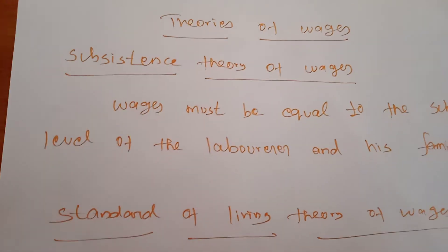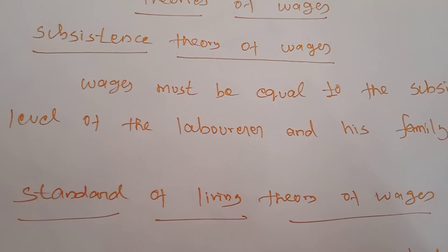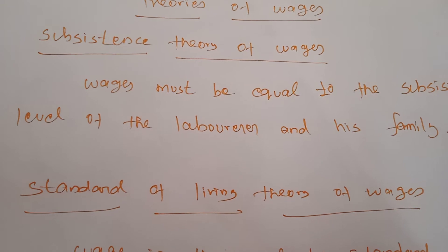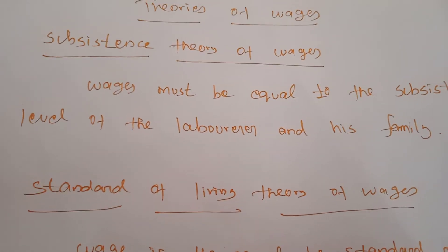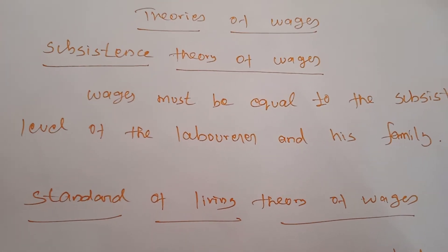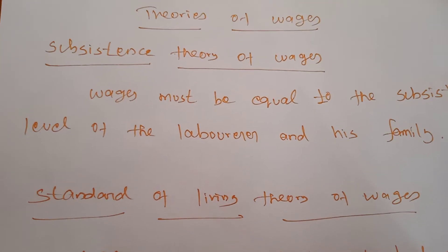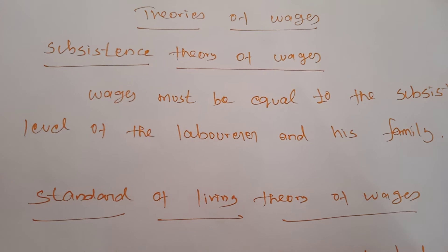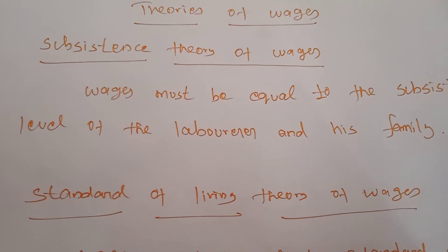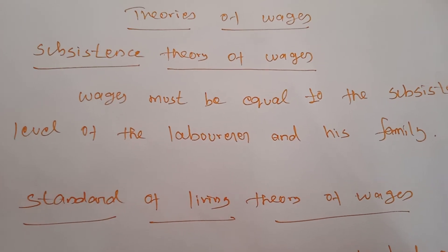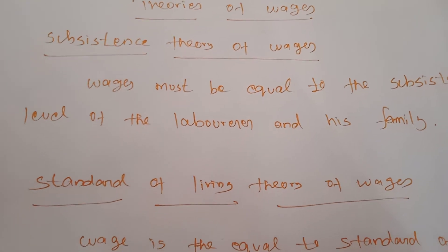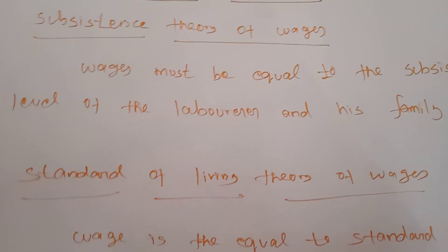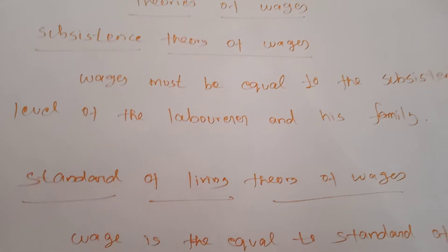The subsistence theory of wages is one of the oldest theories of wages. It was first explained by the Physiocrats, a group of French economists, and was restated by David Ricardo, after which the theory got its full form. According to this theory, wages must be equal to the subsistence level of the labourer and his family. Subsistence means the minimum amount of food, clothing, and shelter which workers and their families require for existence. The wages must be equal to that amount of money only.